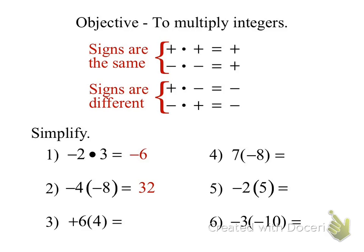Okay, number three. Sergio? It's positive 24. Are the signs the same or different? Different. What kind of six is that? It's a positive six. Actually, wait — it's positive 24. Good. So it's positive 24. The signs are the same. Positive times a positive makes a positive.